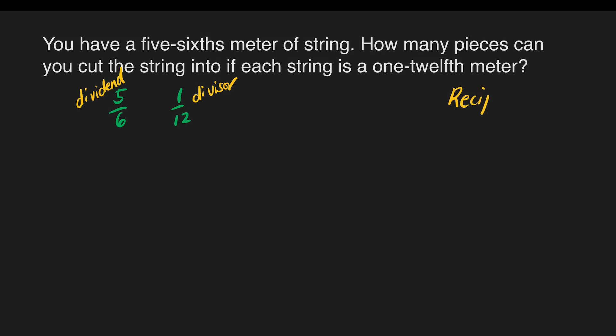Let's review first. What are reciprocals? Reciprocals — when the product of two fractions is equal to one, each fraction is called a reciprocal of the other. Example: the reciprocal of 5/8 is 8/5. Why 8/5?